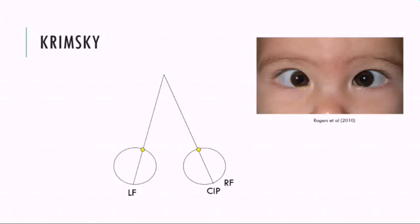Originally, the Krimsky was performed with the prism in front of the deviating eye. However, more commonly now, we perform the Krimsky with the prism in front of the sound eye or the fixing eye. I'll take you through both, starting with putting the prism in front of the deviating eye, and then we'll talk about that more common procedure of putting it in front of the fixing eye.